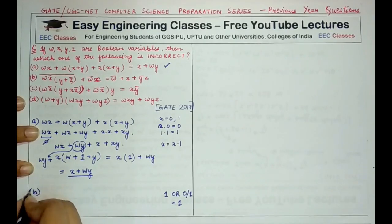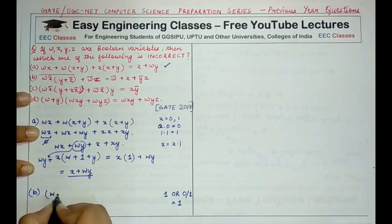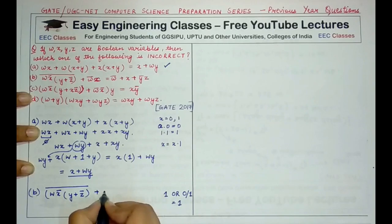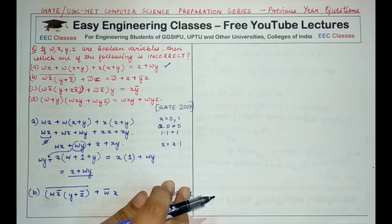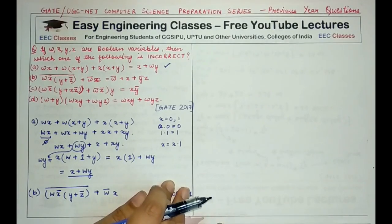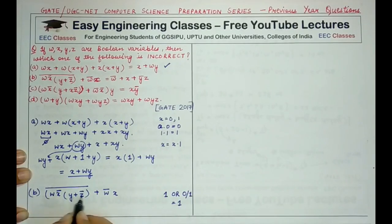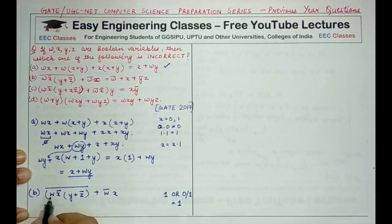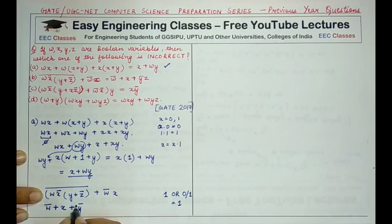We have to find which option is incorrect. So now let's proceed to the second option, the B option. The B option has WX̄ multiplied by Y plus Z̄, whole compliment, plus W̄X. If you apply De Morgan's law directly, then every value would be negated as well as the operator would also change. By applying De Morgan's law to this, what we would get: W̄ plus X plus Ȳ·Z plus W̄X.